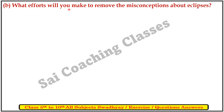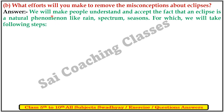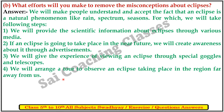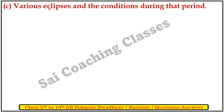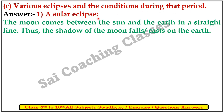What steps would you take to remove misconceptions about the eclipse? We will make people understand and accept the fact that the eclipse is a natural phenomenon, like rain, spectrum, and seasons. Various eclipses and conditions during that period: First, a solar eclipse — the moon comes between the sun and earth in a straight line, and thus a shadow of the moon falls on the earth. A total solar eclipse is visible from within the part of the earth where the umbra of the moon falls.